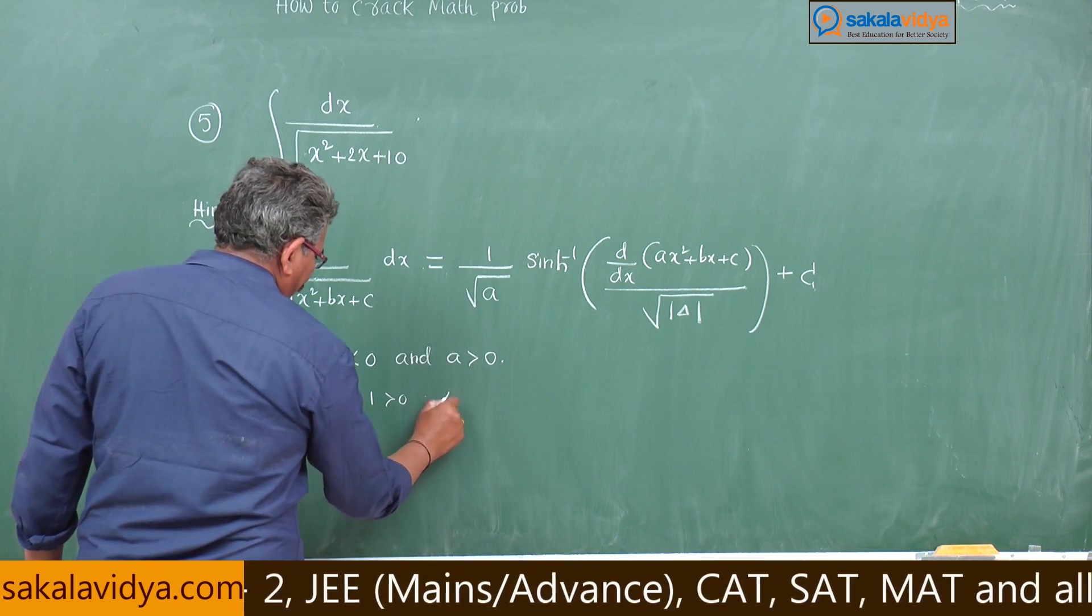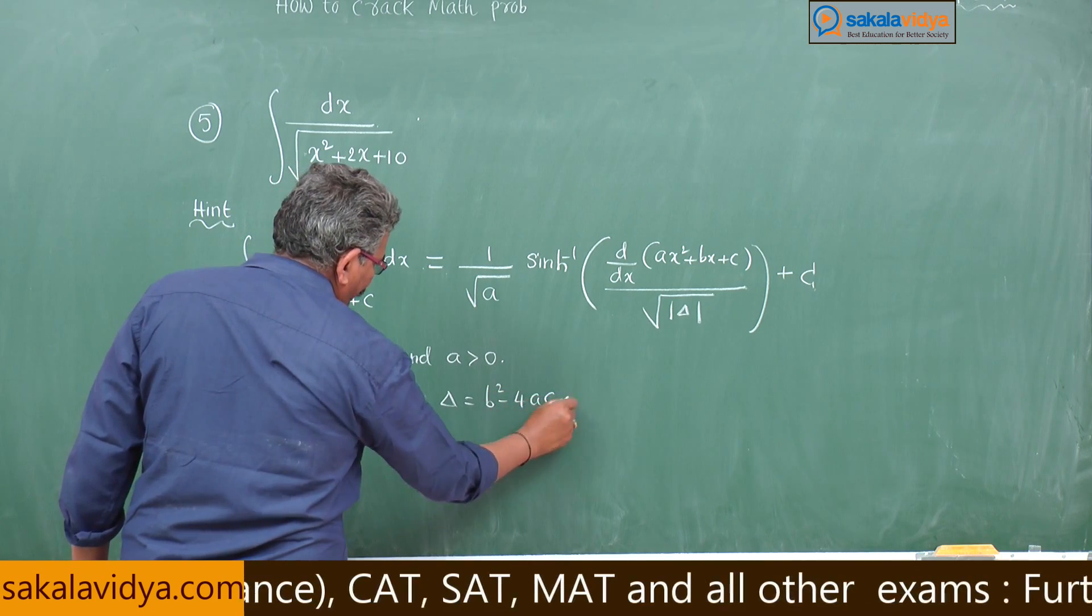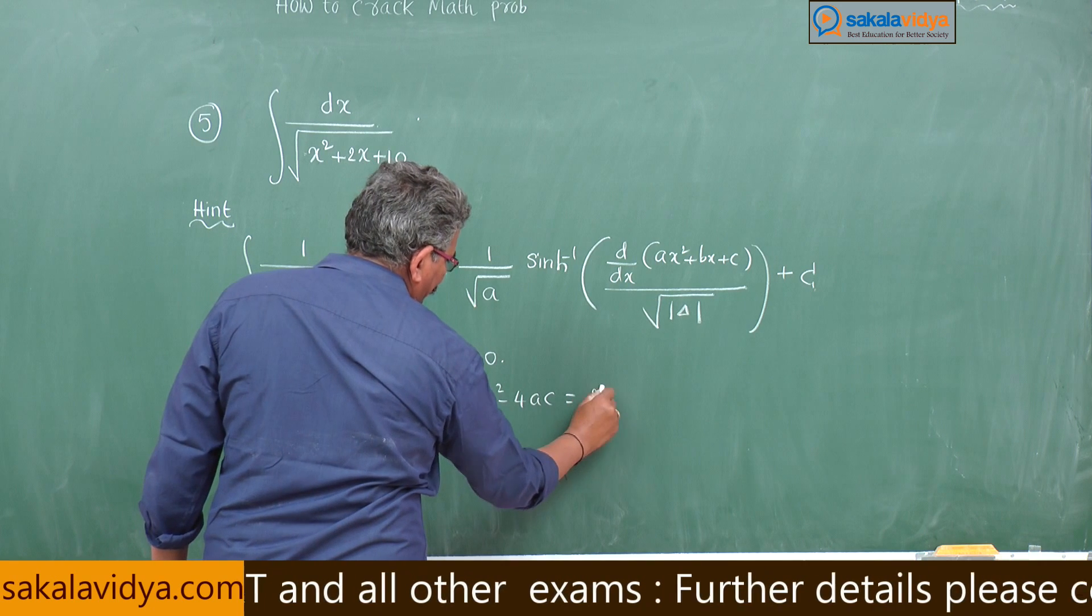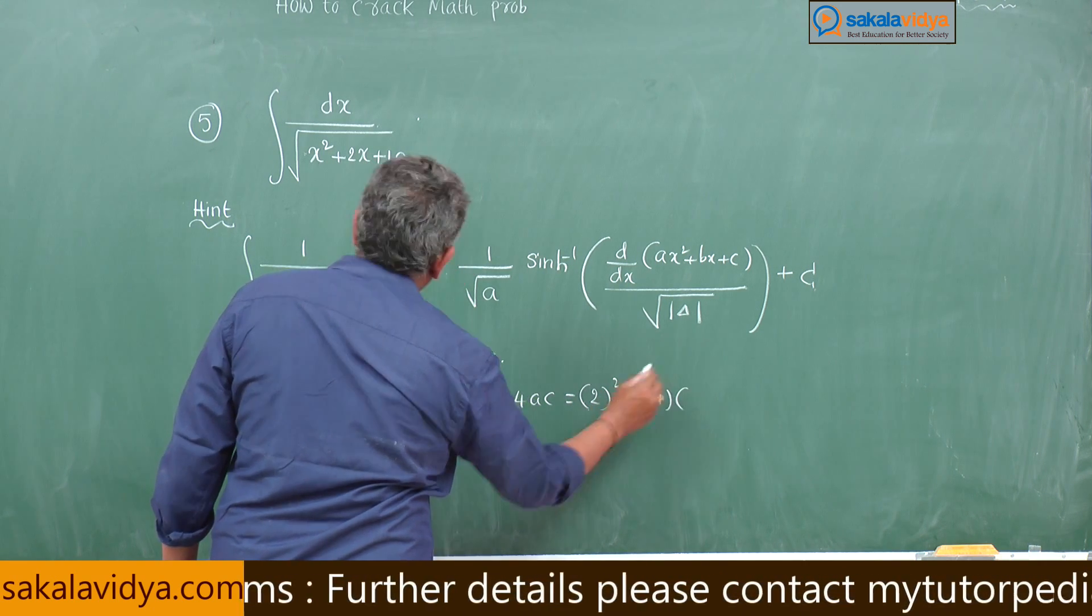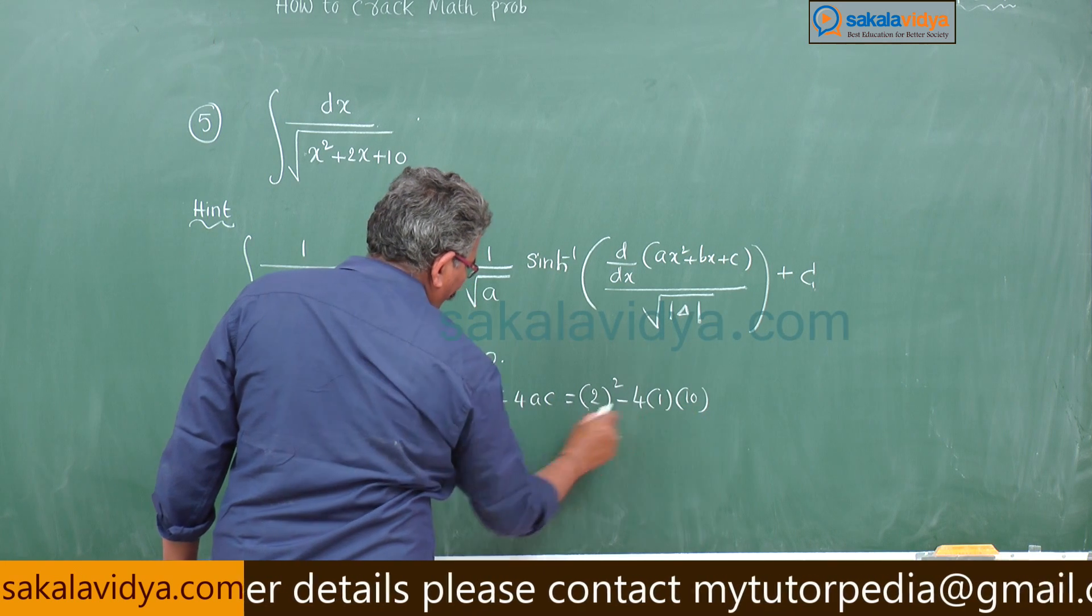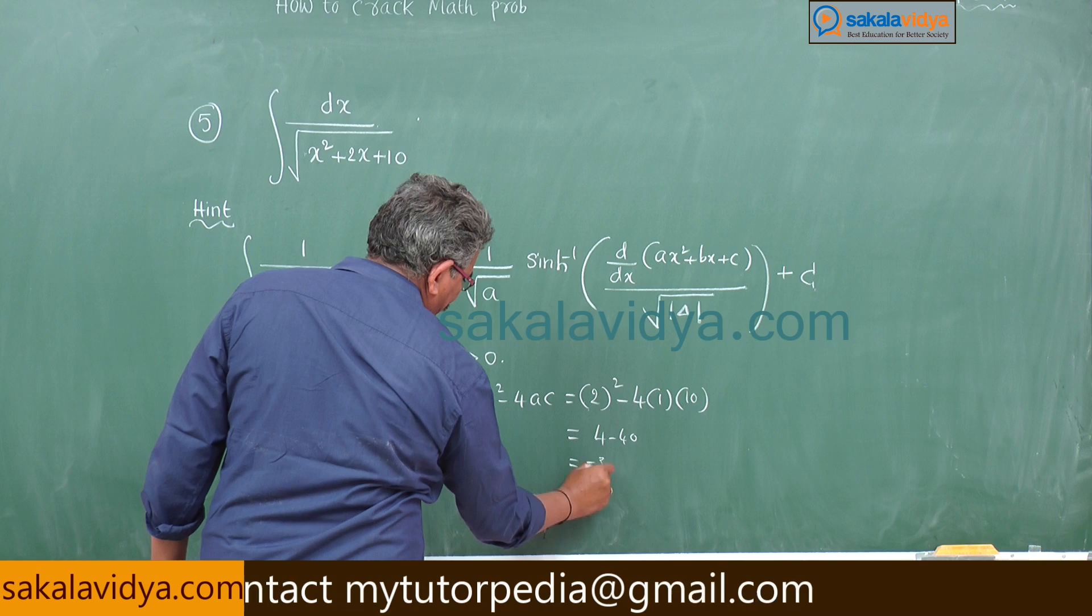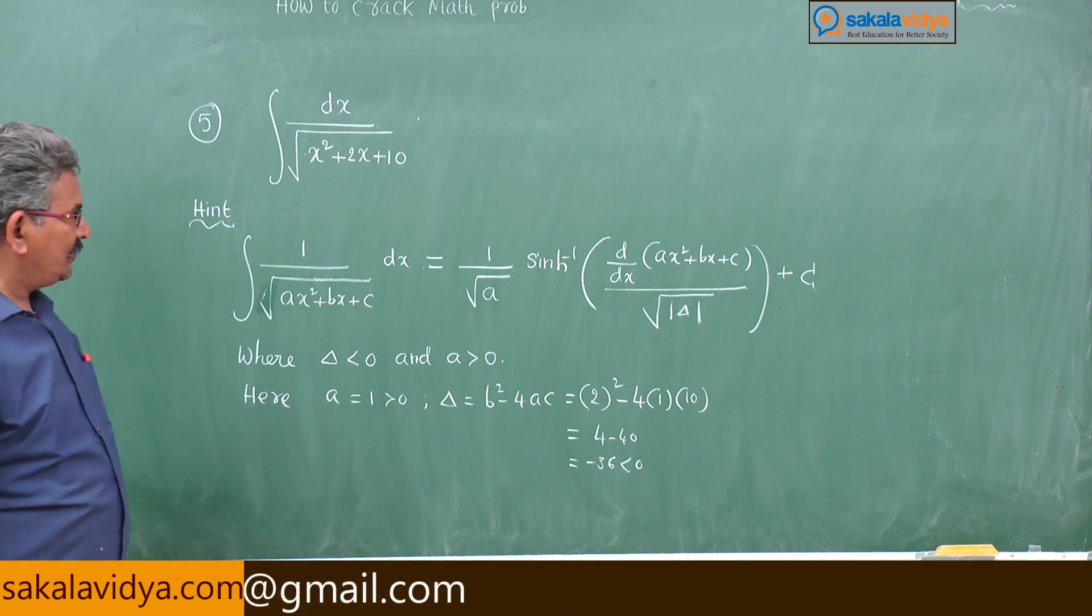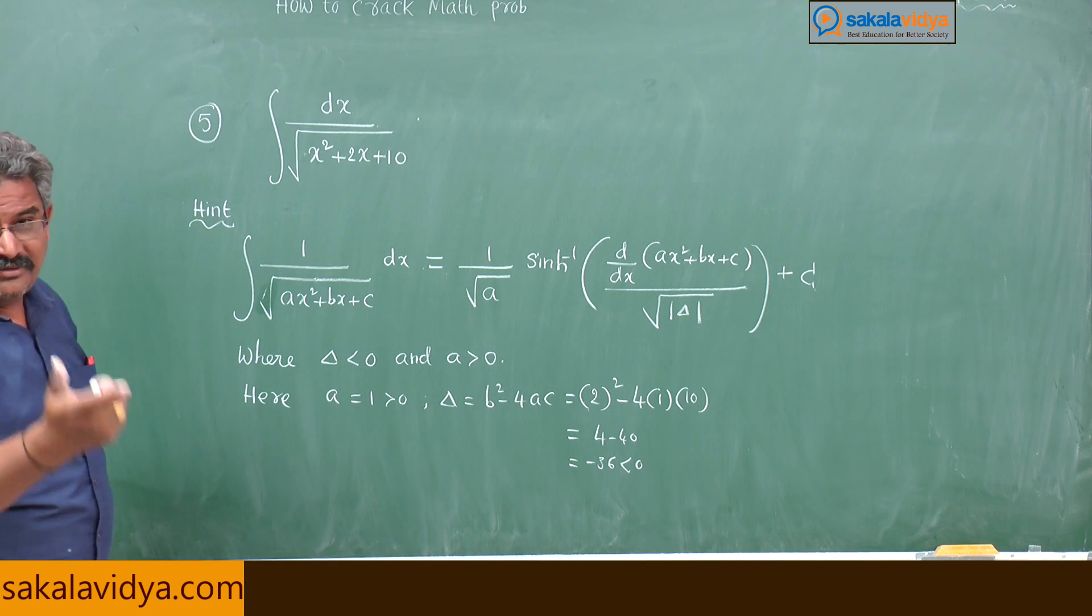Now we have to find out delta. Delta is we know b square minus 4ac. That is 2 square minus 4 into 1 into 10, 4 minus 40, minus 36, which is less than 0. Can we apply the shortcut? Yes, why not we can apply.